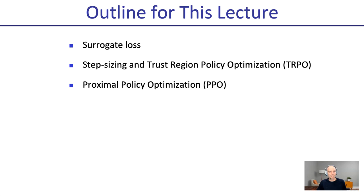Higher-order optimization tends to be difficult to run on networks with very large numbers of parameters. So we'll look at an improvement: a first-order approximation to the TRPO ideas. That last method, PPO, is these days maybe the most popular RL method out there.